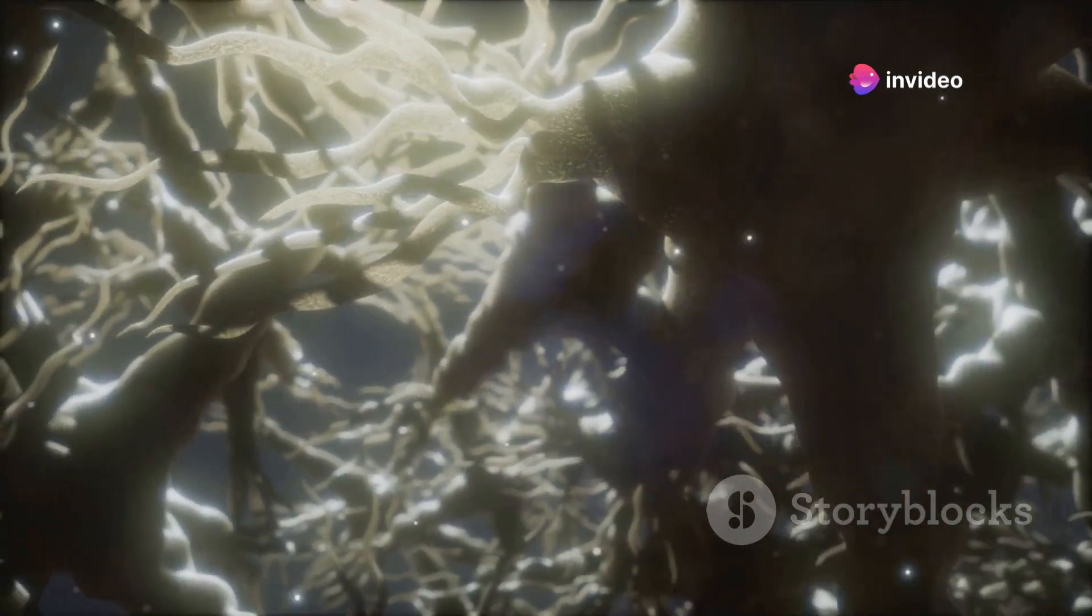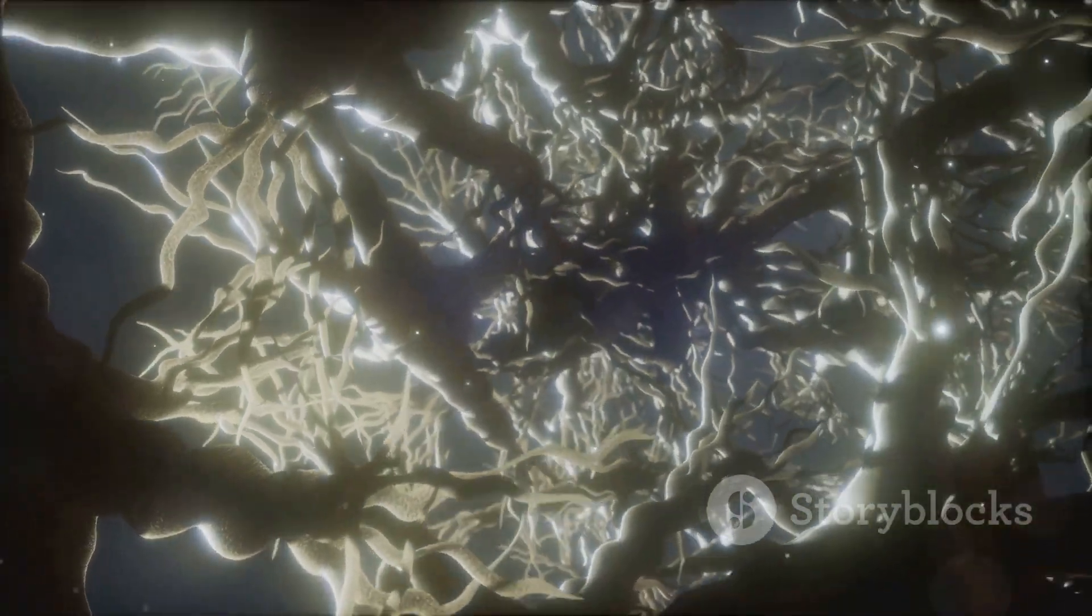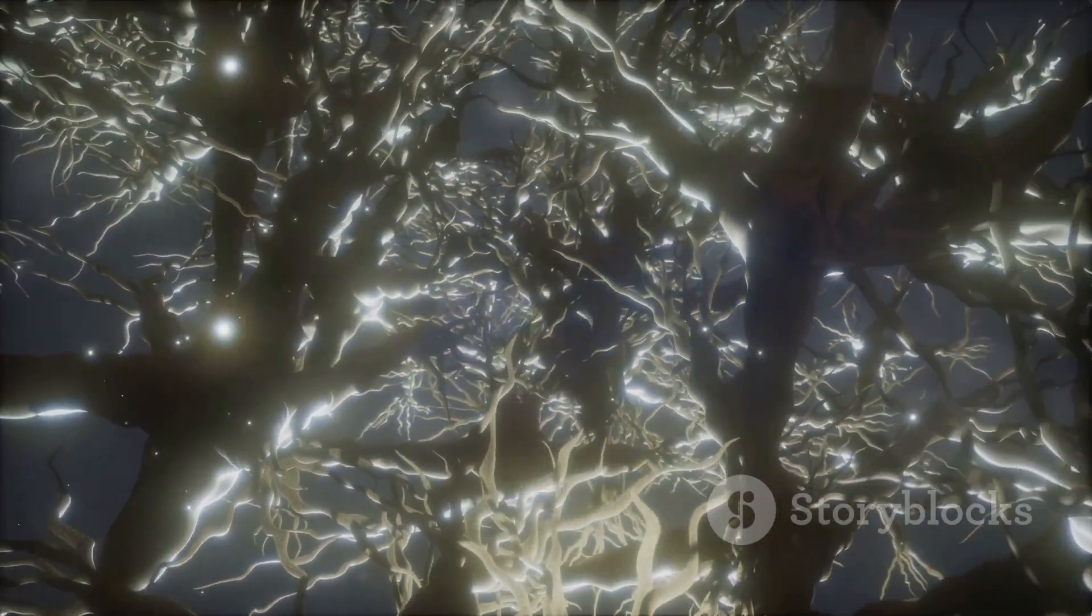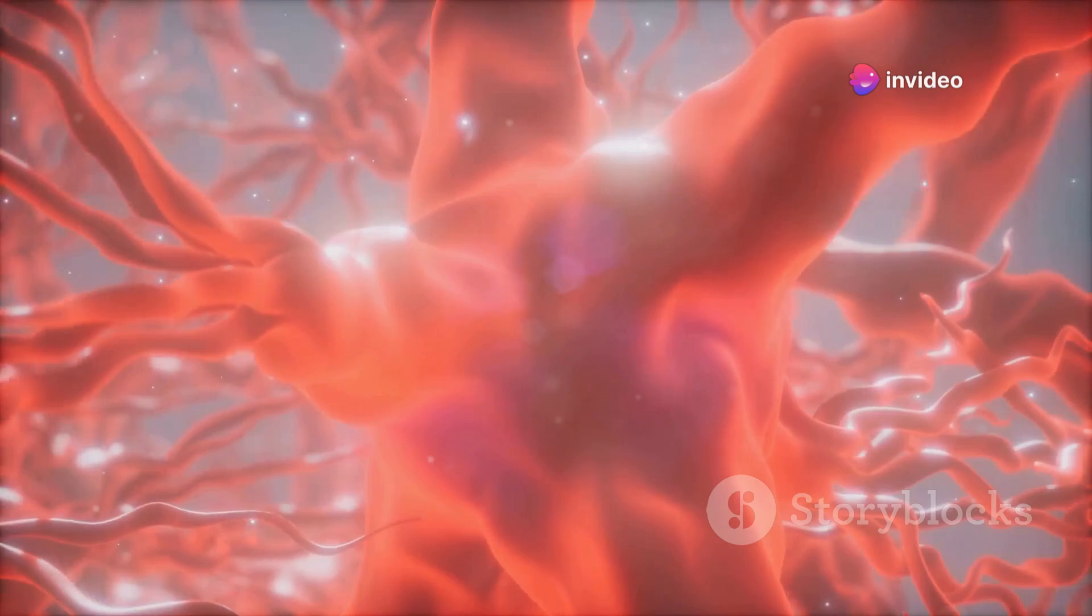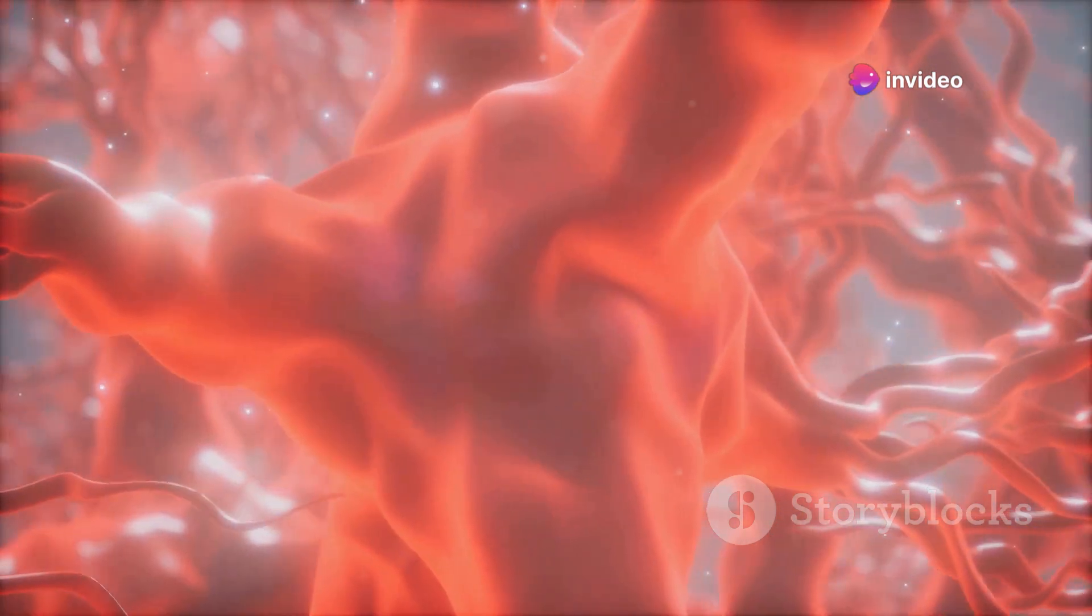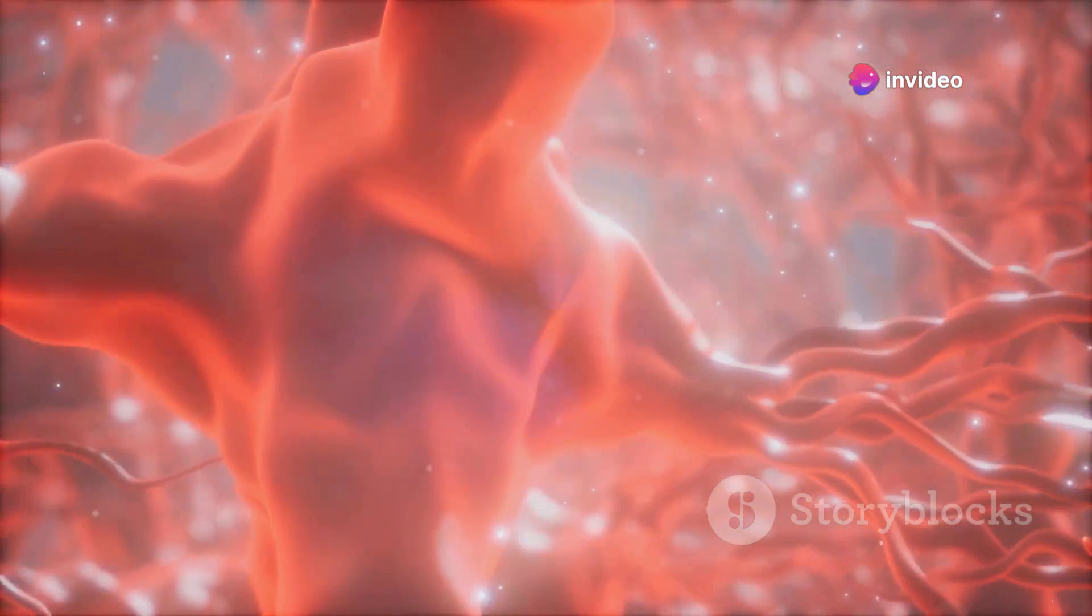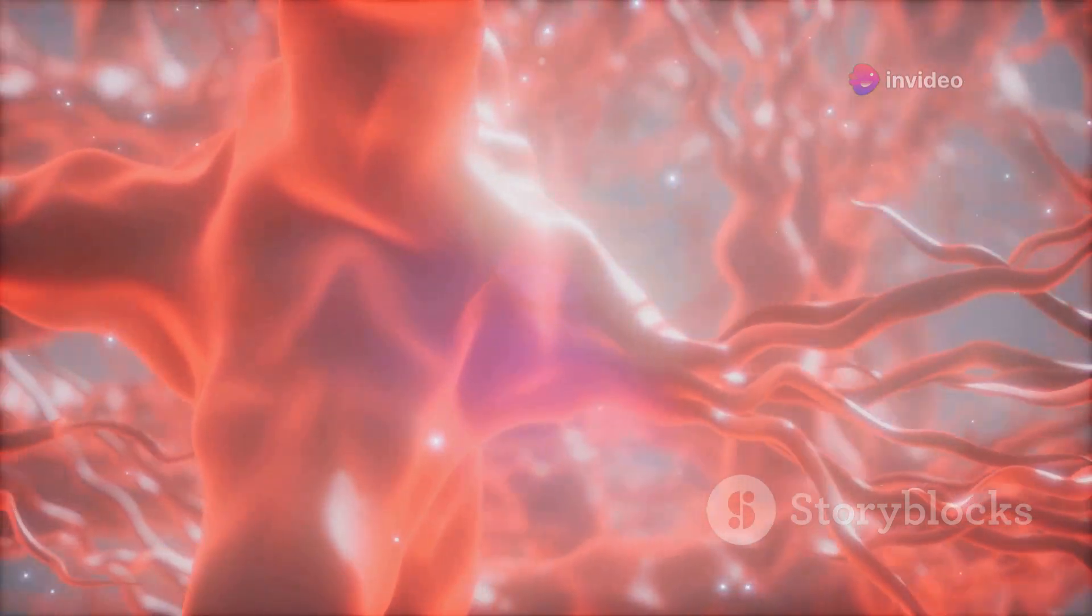Our brain operates much like a supercomputer, processing and storing vast amounts of data. When we experience something new, our brain fires up, neurons start connecting, and a memory is born. This process is called encoding. It's the first step in creating a memory, like writing a note on a piece of paper.